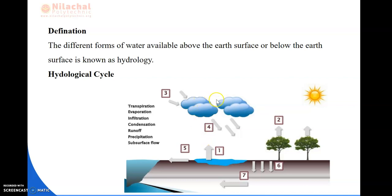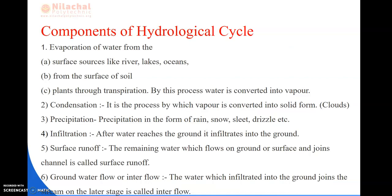After that, cloud formation occurs and then precipitation or rainfall takes place. Here are some components of the hydrological cycle. First is evaporation of water from surface sources like lakes, rivers, and oceans, then from the surface of the soil, and from plants through transpiration. By this process the water is conveyed into vapour. Next is condensation — a process by which the vapour is converted into a solid form, that is, in the form of clouds.